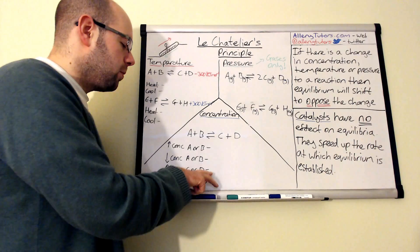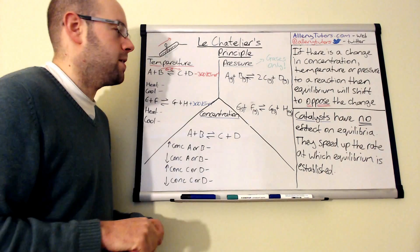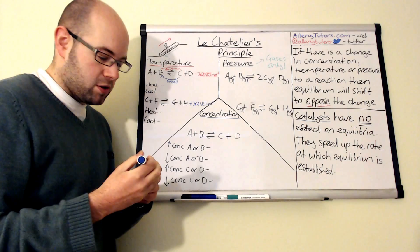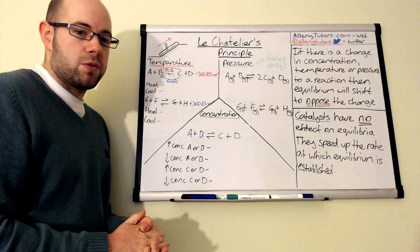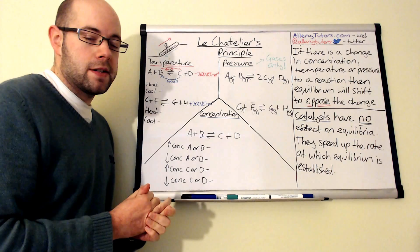That enthalpy number tells us that in the forward direction — going from A and B to C and D — the reaction is exothermic, which I've marked with a red arrow. Then the backwards direction must be endothermic, meaning it takes heat in from the surroundings. We're going to test what happens when we heat this reaction up and when we cool it down, and explain it in terms of where equilibrium is shifting and Le Chatelier's principle.